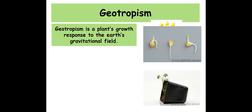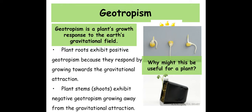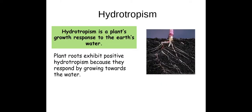Geotropism is the plant's response towards the gravitational field or gravitational pull. We see positive geotropism in the roots because they grow towards the gravitational pull, and the stems grow away — that's negative geotropism. Hydrotropism — hydro meaning water — is the plant's response to water, and plant roots exhibit positive hydrotropism because they respond by growing towards water.